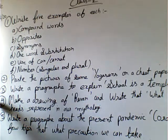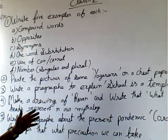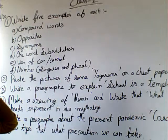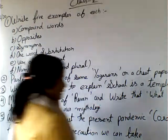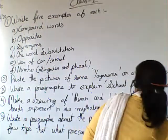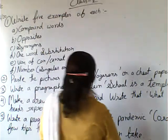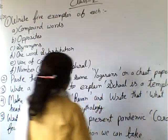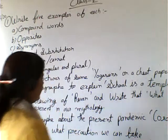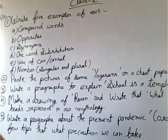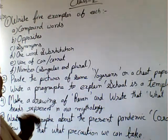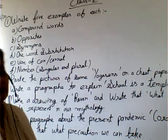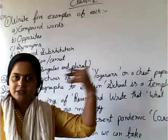The fourth task is to make a drawing of Ravan. You have to make a drawing of Ravan and write about what his ten heads represent in our mythology.